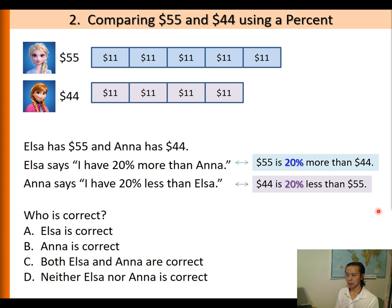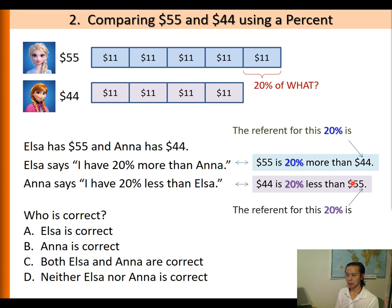Who do you think is correct? There's a difference of $11. This $11 is 20% of what? In general, when Elsa says I have 20% more than Anna, the 20% is actually referring to 20% of Anna's $44. So the reference of this 20% is $44. Whereas Anna's 20% is referring to Elsa's $55. So 20% of $55 is $11, meaning Anna is correct. The answer is B.